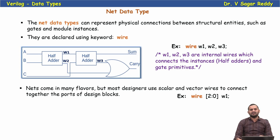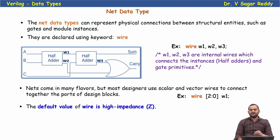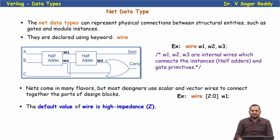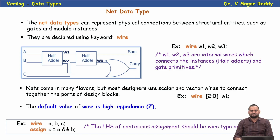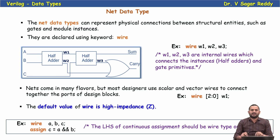The default value of wire is z (high impedance) if nothing is initialized. For example: wire a, b, c; assign c = a & b. The LHS of a continuous assignment must always be a wire type. Always remember that the LHS of a continuous assignment should be a wire type.